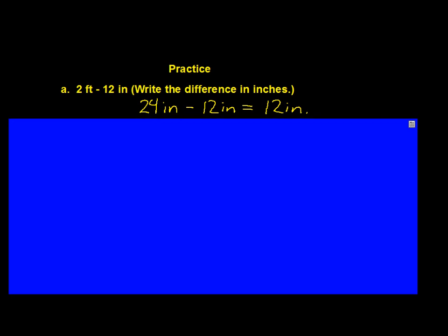Okay, on to practice checking. Take a look at the first one. They wanted us to write the answer in inches. So we converted 2 feet to 24 inches. 24 minus 12 is 12 inches.